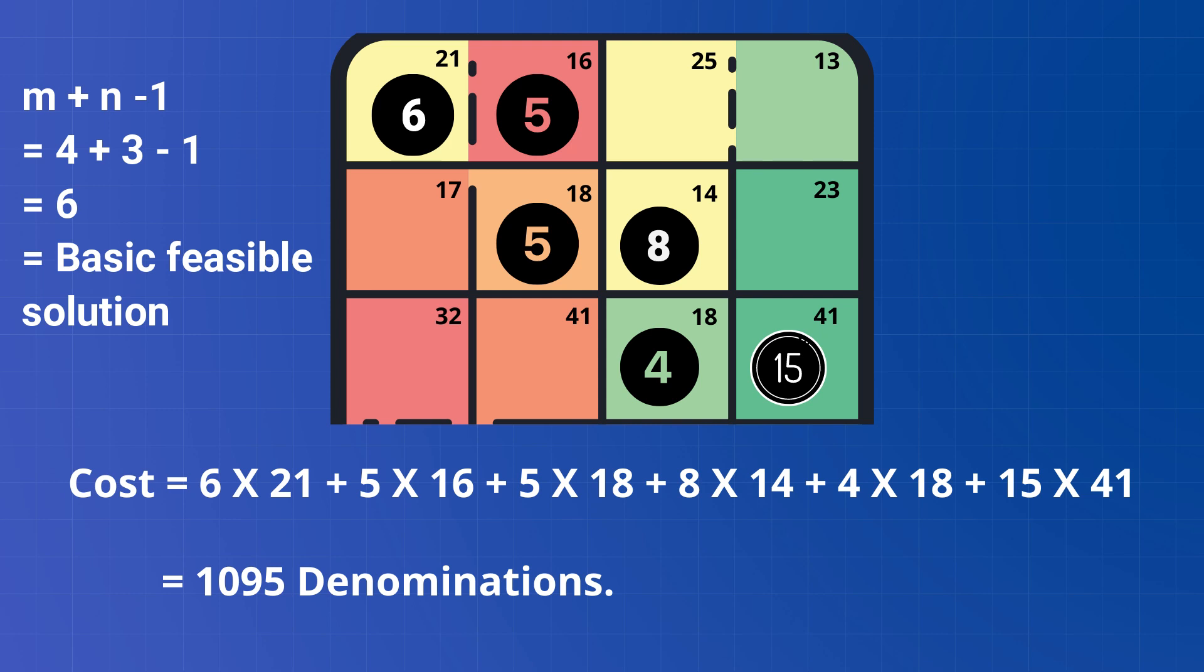Now let's calculate the cost of transportation. The cost can be calculated by multiplying the allocated value of xij of allocated cells with given cij values in the matrix or the table. So the optimum or the optimized cost would be 6 into 21 plus 5 into 16 plus 5 into 18 plus 8 into 14 plus 4 into 18 plus 15 into 41. That is 1095 denominations.